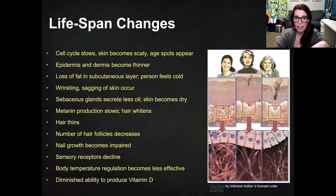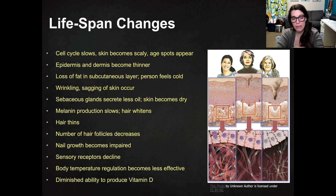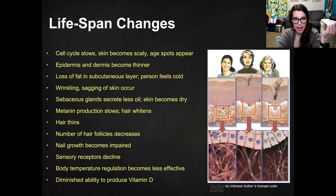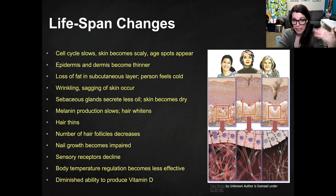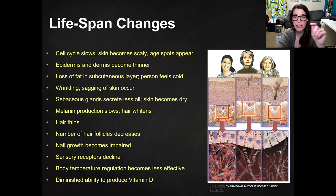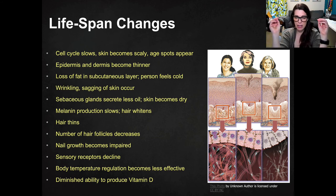Sebaceous glands secrete less oil as you age, so the skin becomes dry — which might sound like good news for acne, but it leads to cracking and other skin problems. Melanin production decreases in the skin and hair follicles, causing white and gray hair. Hair can thin as the number of follicles decreases, though some people develop coarser hair — the diameter of each hair shaft can increase depending on genetics. Nail growth slows due to less mitotic division in epidermal cells.